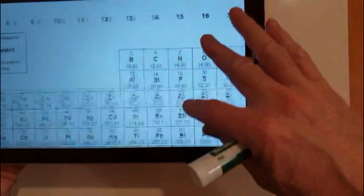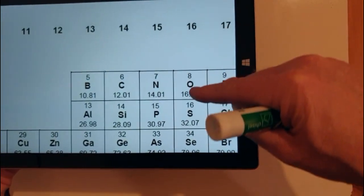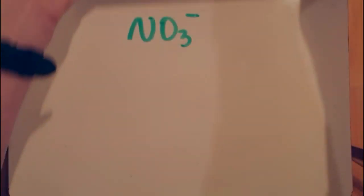So nitrogen is in group 15, it has five valence electrons, and oxygen is in group 16, so it has six valence electrons.